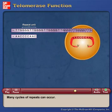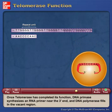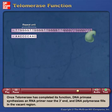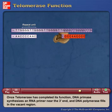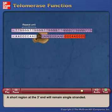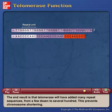Many cycles of repeats can occur. Once telomerase has completed its function, DNA primase synthesizes an RNA primer near the 3' end, and DNA polymerase fills in the vacant region. A short region at the 3' end will remain single-stranded. The end result is that telomerase will have added many repeat sequences, from a few dozen to several hundred, which prevents chromosome shortening.